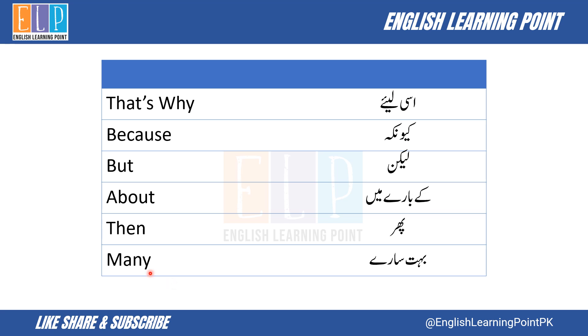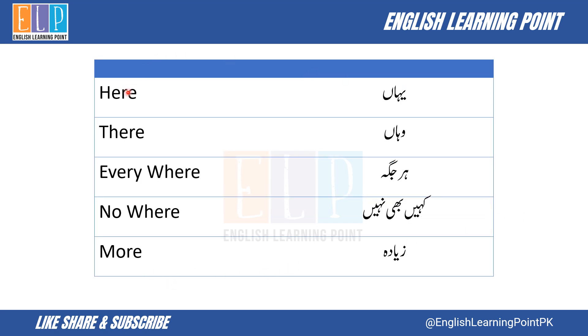Many — bhoat saare. Here — yahaan. There — wahaan. Everywhere — har jaga. Nowhere — kahi bhi nahi.